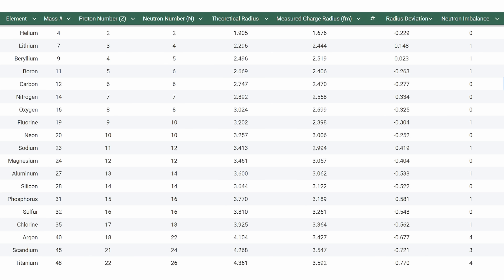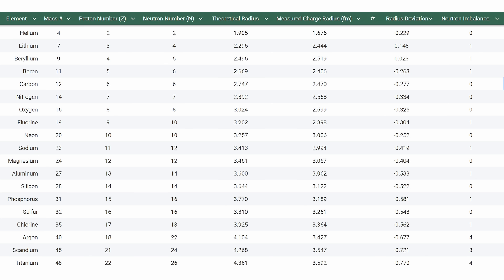When charge radii are measured experimentally, a curious trend emerges. Most elements have a smaller charge radius than theoretical models predict, with two notable exceptions, lithium and beryllium, which appear larger than expected.